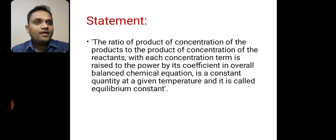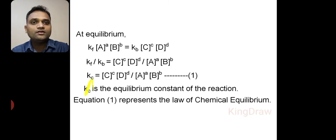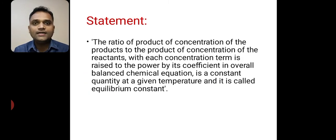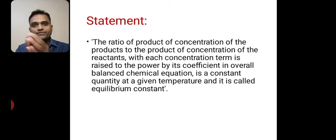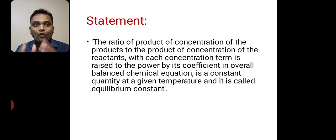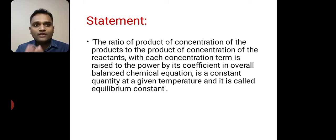This ratio is a constant quantity at a given temperature, and it is called the equilibrium constant Kc. To repeat the statement: the ratio of the product of concentration of the products to the product of concentration of the reactants, with each concentration term raised to its coefficient in the overall balanced chemical equation, is a constant quantity at a given temperature and is called the equilibrium constant. This is the statement of the law of chemical equilibrium.